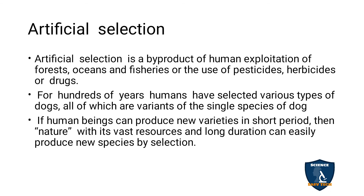Each person has their own variety of dog, but all are the same species. If humans can select a dog and produce varieties in a short period, think about how nature, with its large resources and long duration, can produce new species. The artificial selection example of the dog shows how new origin of species can be formed; nature has very large resources and a long duration to achieve this.